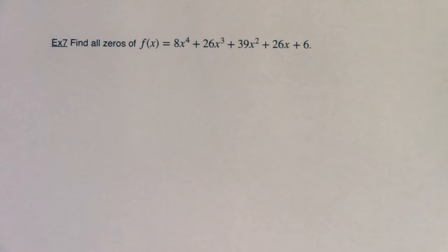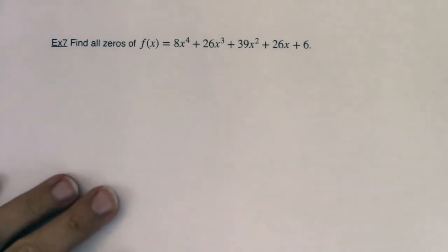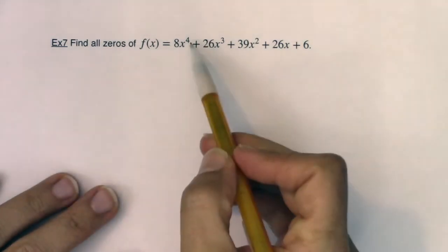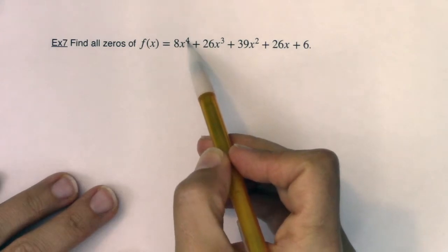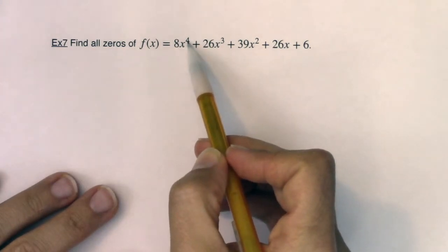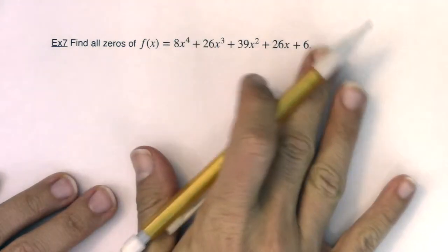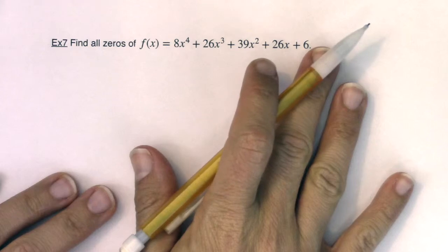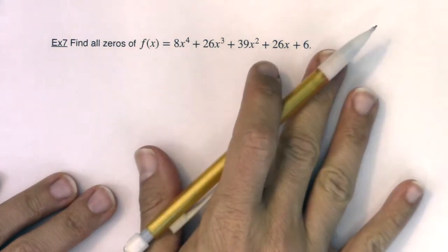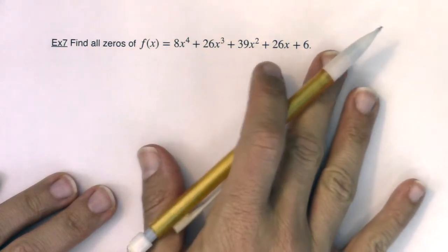Hey Math31, here we are with example seven. We're going to find all of the zeros of this quartic. If it's a quartic, that means I'm going to have four zeros. They might not be distinct — there might be some multiplicity with them.